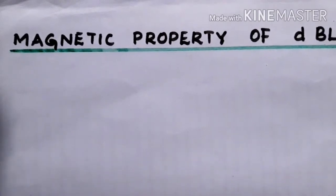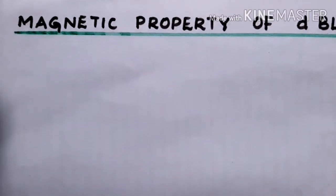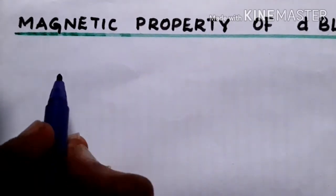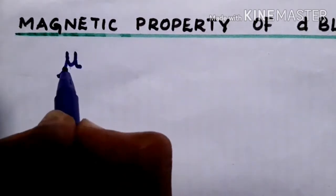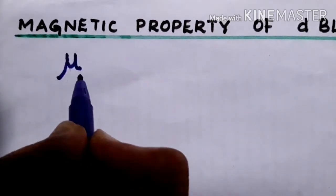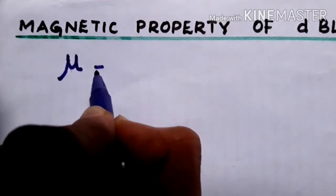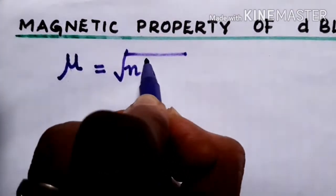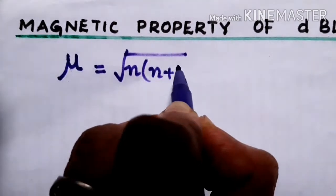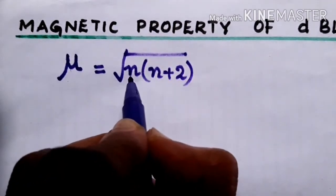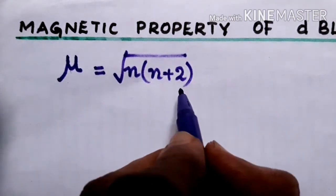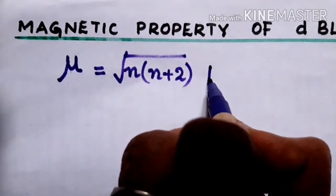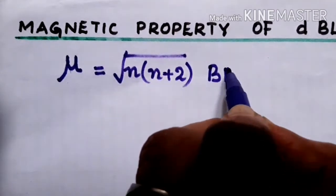Paramagnetic behavior can be measured using what is called the spin-only magnetic moment, represented by the letter mu. Mu is equal to the square root of n(n+2), where n stands for the number of unpaired electrons, and this is given the unit Bohr magneton.